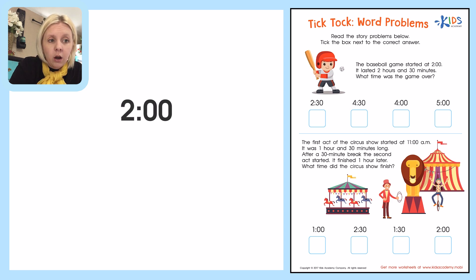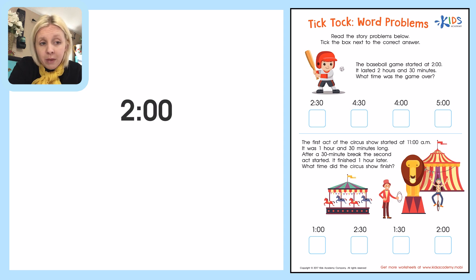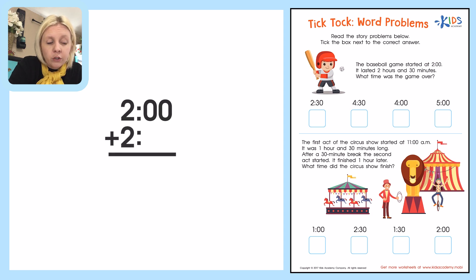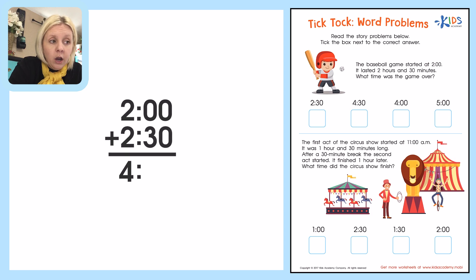Sometimes we can set up a problem that has to do with time just like a regular word problem, but sometimes we can't because minutes are not the same as other numbers — 60 minutes equals an hour. So it's a little bit different. It lasted 2 hours and 30 minutes, so we can take 2 o'clock and add 2 hours. Looking at just the hour side, we've got 2, then 3 o'clock, then 4 o'clock. And then we add 30 minutes, which makes it 4:30. That's the time.